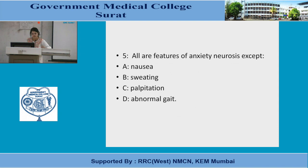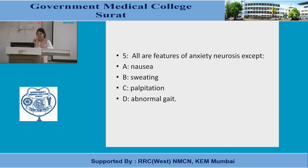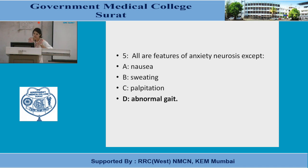Question 5: All the following are features of anxiety neurosis EXCEPT — A, nausea; B, sweating; C, palpitation; D, abnormal gait. Please be careful of the word 'except' in MCQs. The answer is abnormal gait. Gait — how a patient walks — is not a feature of anxiety neurosis.